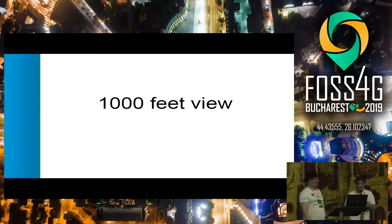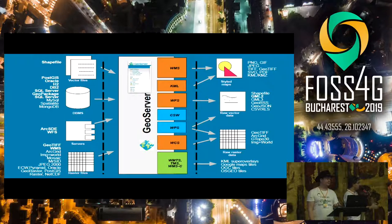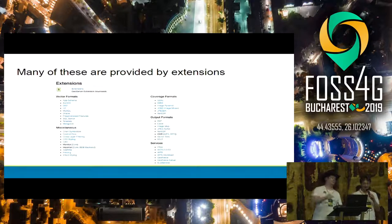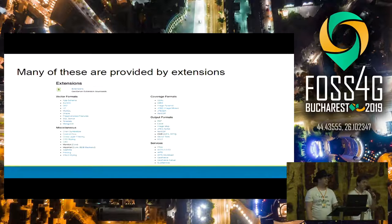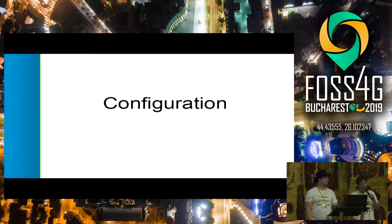We are going to hit you with a 10,000 feet view. This is a diagram showing more or less what GeoServer can do — all the services, all the inputs, all the outputs, and so on. We can move on and see a slide for every topic instead. Many of these functionalities are provided by extensions, and we also have community modules. So if you see something new that you are not used to, it's probably coming from an extension or a community module.